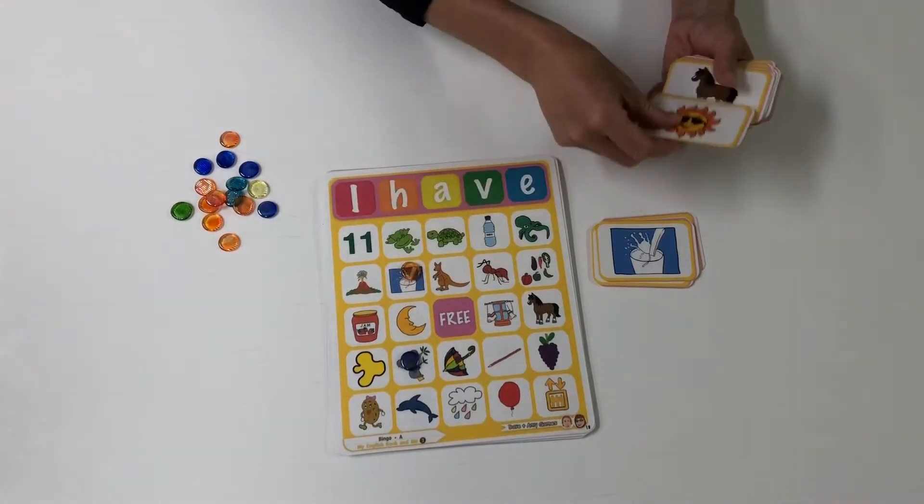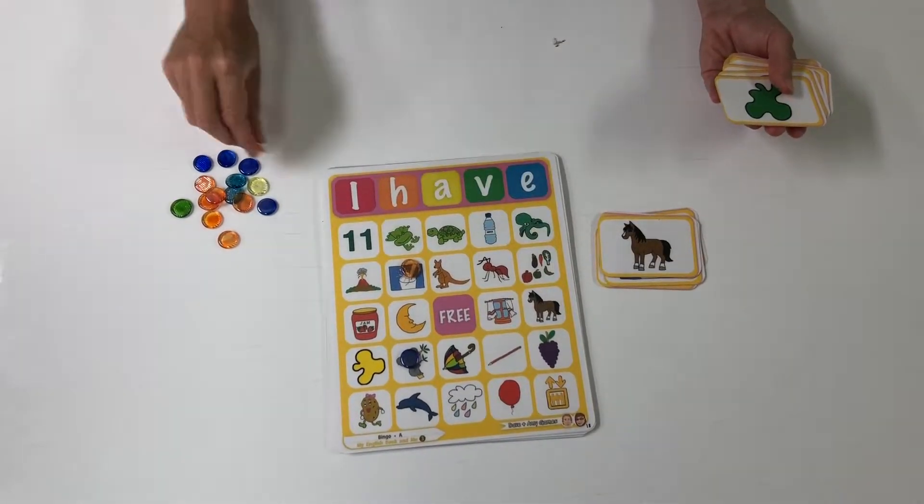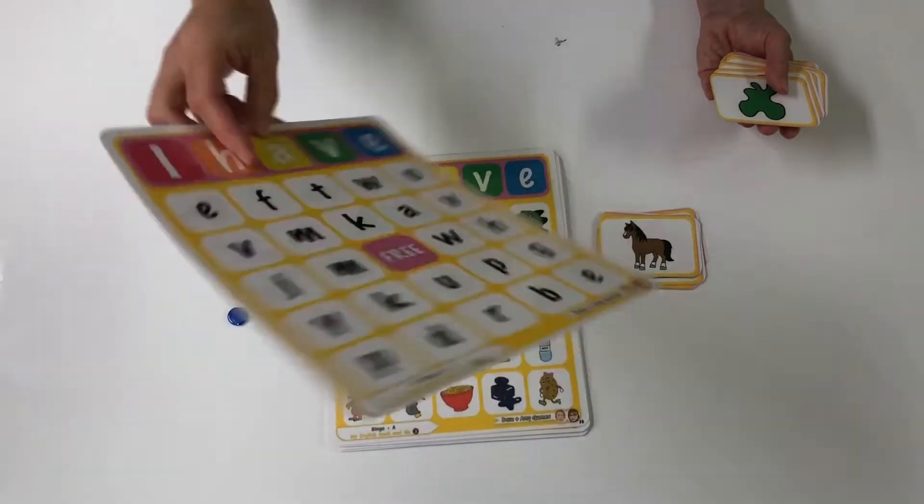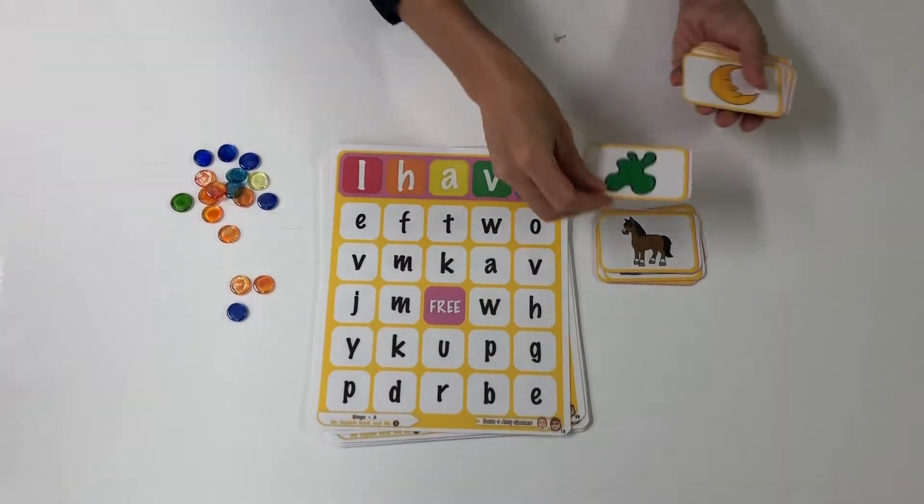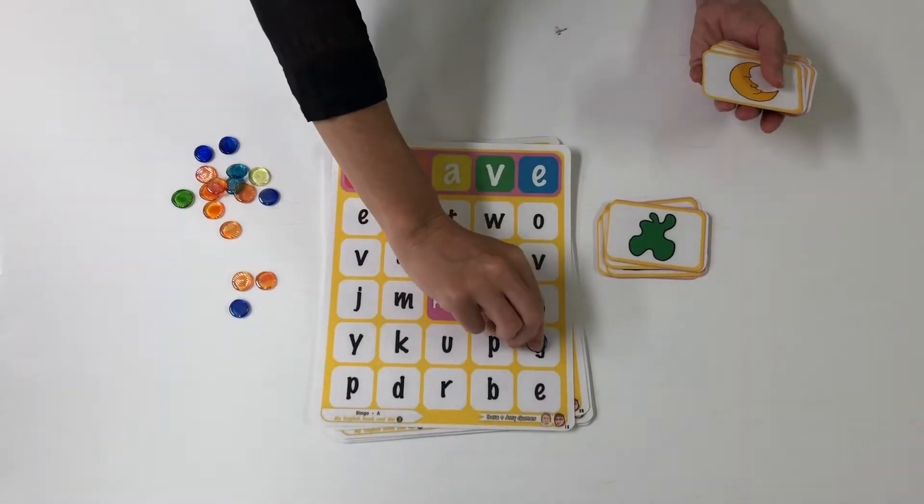Sunny - I have sunny. Horse - I have a horse. Advanced: do the letter side. Green - I have green.